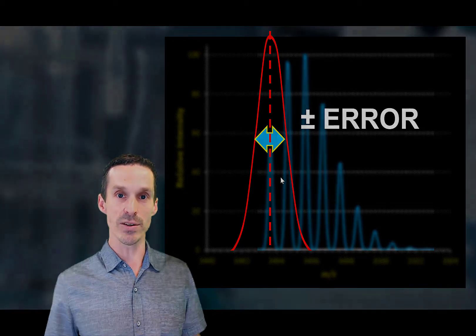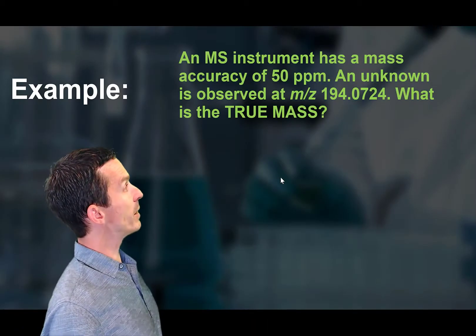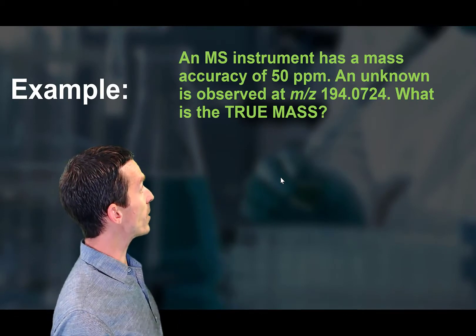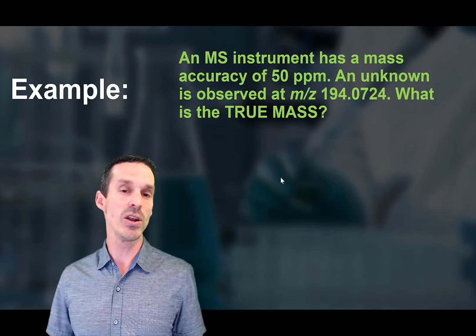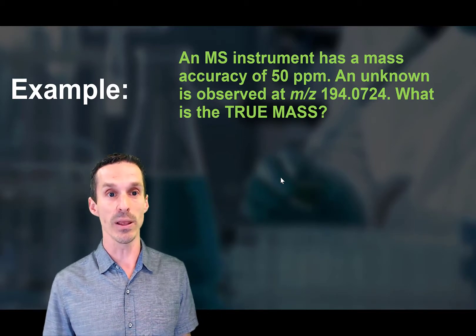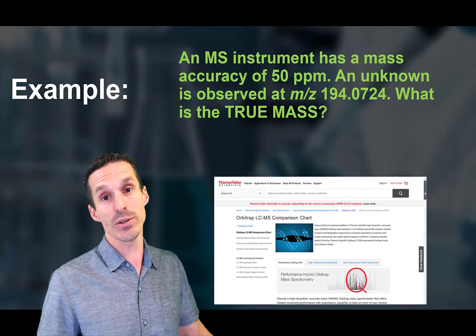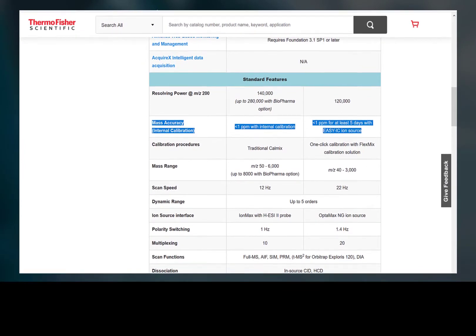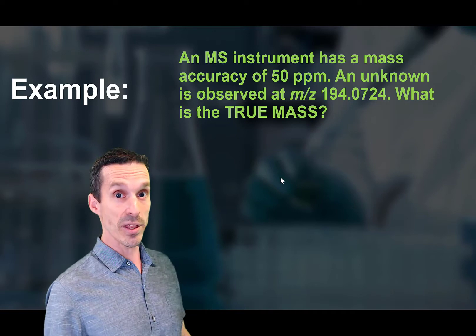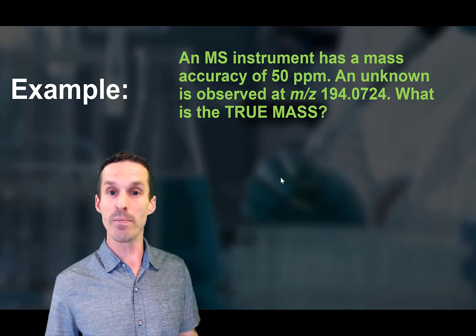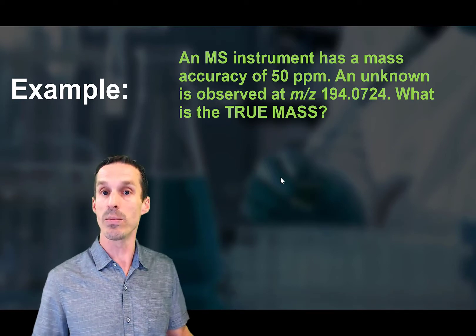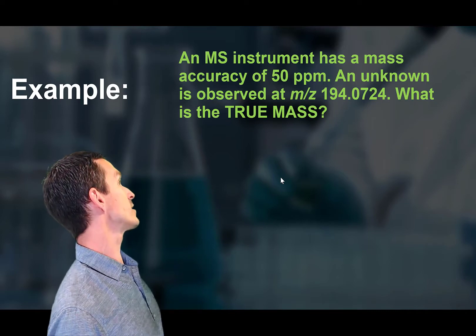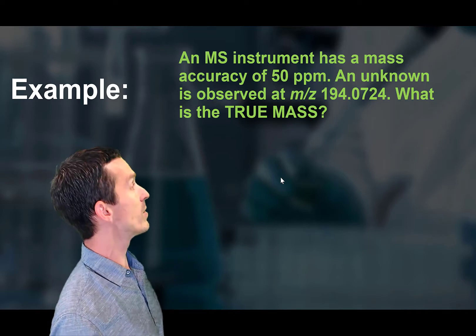Let's just do an example to kind of drive this home. Okay, so in this example here, we have a mass spectrometer and it provides us with a mass accuracy of 50 parts per million. And just pause for a second. How would you even know that the mass spectrometer provides 50 parts per million? Well, one of two ways, actually. First, usually the instrument manufacturers are going to tell you, hey, our mass spectrometers are good to 50 parts per million. That's pretty good. And the other thing that you could do is just check it out for yourself. So take a compound that you know the mass and start measuring it. You'll see that the numbers are going to vary a little bit. So back to the question, we take our unknown and we read it and it just gives us a mass of 194.0724.